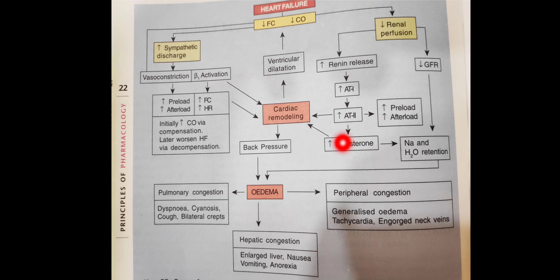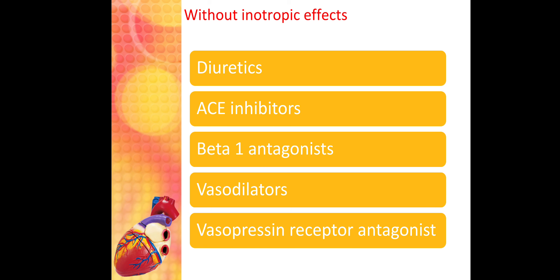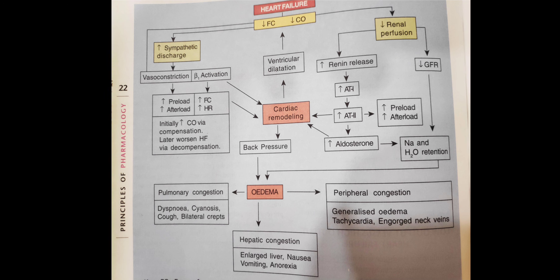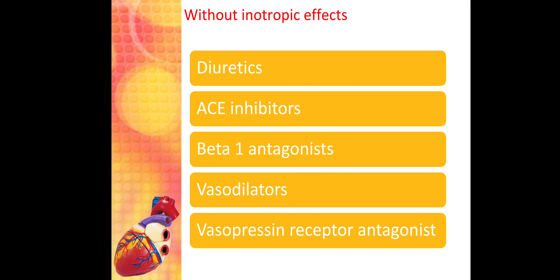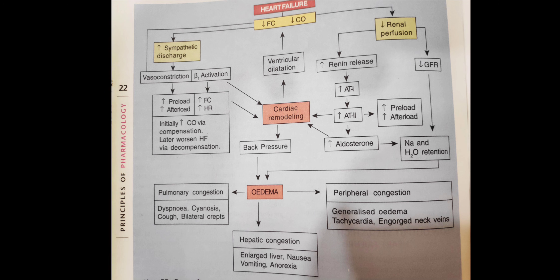Beta blockers, already covered in ANS, are useful in CHF by blocking the increased sympathetic discharge and beta-1 activation and vasoconstriction seen in the pathophysiology. Although they cause bradycardia and seem counterintuitive, they have proven long-term beneficial effects. Carvedilol is particularly useful, as it has beta-1, beta-2, and alpha-1 blocking effects, along with free radical scavenging properties. Not all beta blockers can be used.